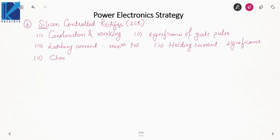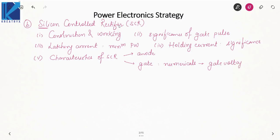Then you will study the characteristics of SCR — two characteristics: first is the anode characteristic, and second is the gate characteristic. In gate characteristic, you also have to practice numericals. The numericals will ask whether or not the SCR will be triggered, the gate voltage required to trigger the SCR, gate current, and power dissipation at the gate terminal. Based on anode characteristic, numericals are not generally asked. These questions you will easily find in PS Bimra, which has a lot of numericals based on gate characteristics.